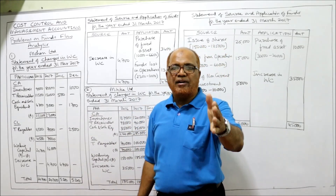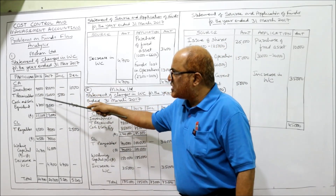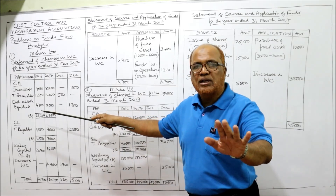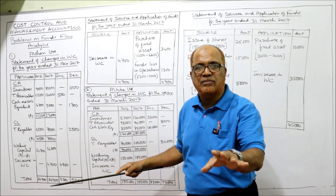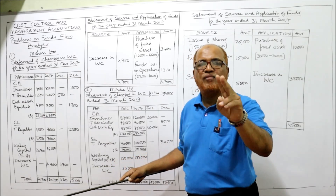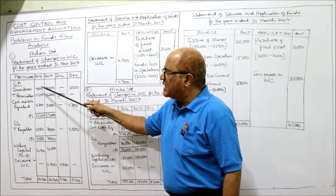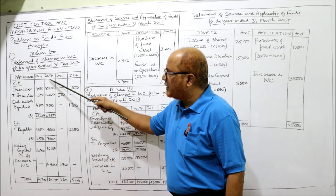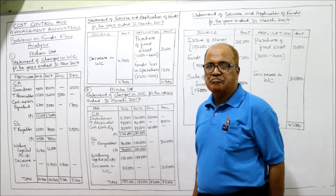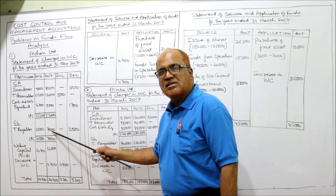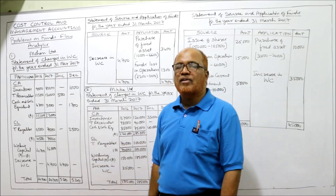Under current assets, three are given: inventories, trade receivable, and cash and cash equivalents. Take the same amounts in the last year and current year columns. The total of current assets: last year 25,200, current year 23,000. Current liability — only one: trade payable. Last year 4,500, current year 7,000.